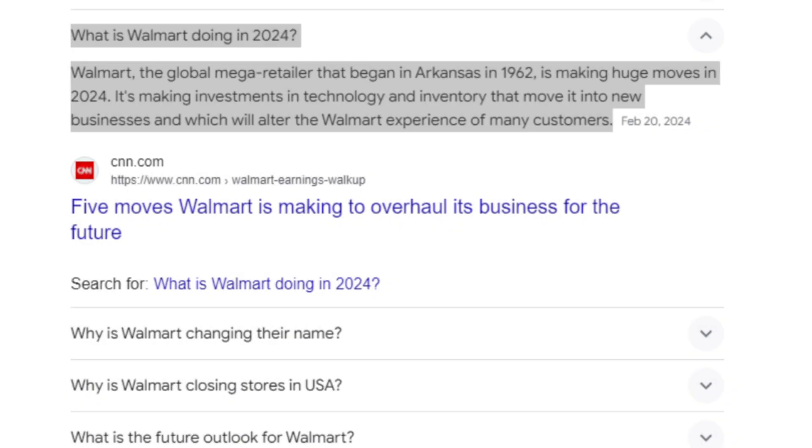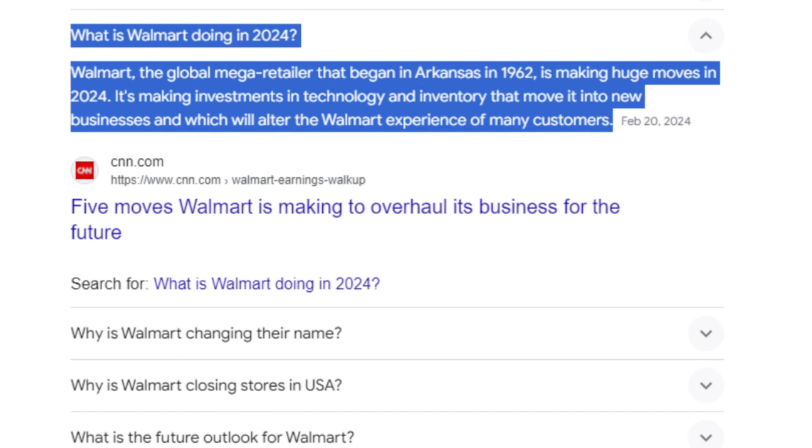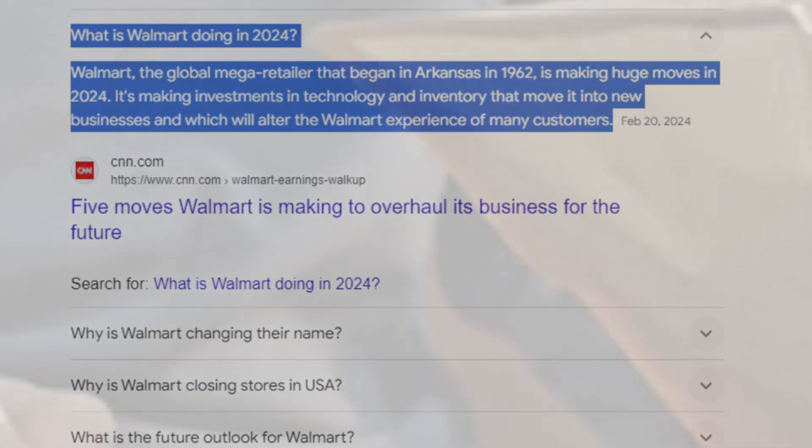You could take Walmart as a prime example. They were late out the gate when it came to online shopping. The post-COVID era is when the decision to go digital came about. Through that era, Amazon kept on thriving because of the years in advance of doing digital business.